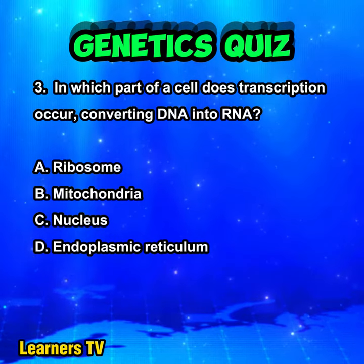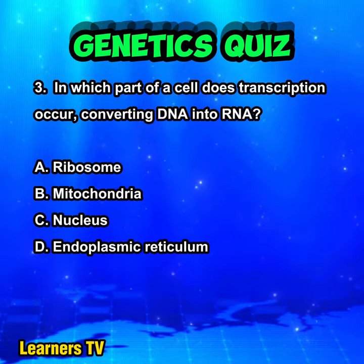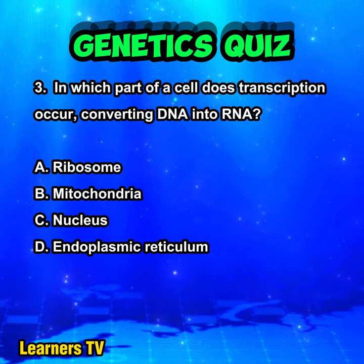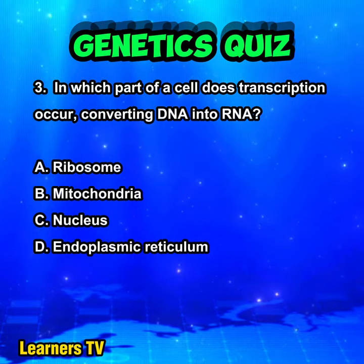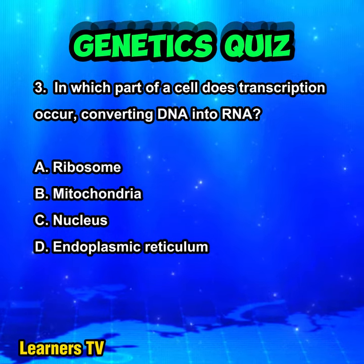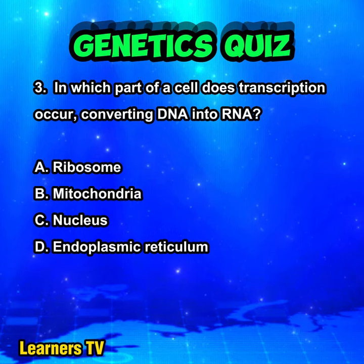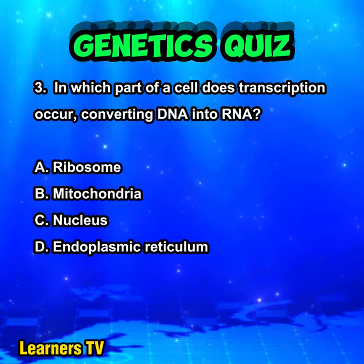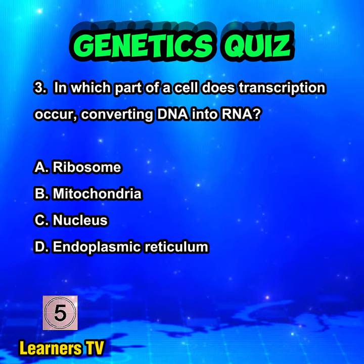In which part of a cell does transcription occur, converting DNA into RNA? A. Ribosome. B. Mitochondria. C. Nucleus. D. Endoplasmic reticulum.